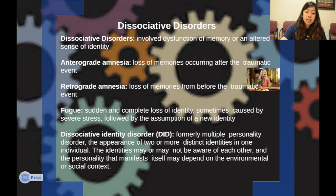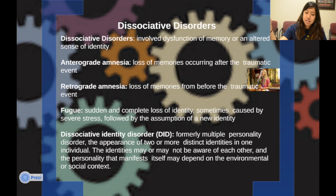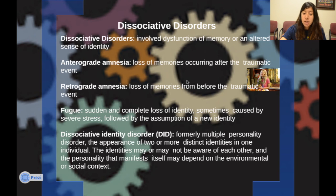Fugue is the sudden and complete loss of identity, sometimes caused by severe stress and followed by the assumption of a new identity — like in movies where a person completely forgets who they are and needs help restarting their life. Dissociative identity disorder, or DID — formerly called multiple personality disorder — is the appearance of two or more distinct identities in one individual. The identities may or may not be aware of each other, and which personality manifests may depend on environmental or social context.